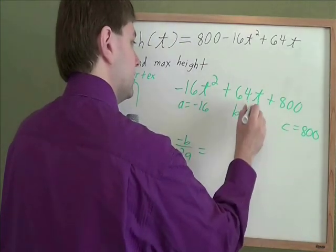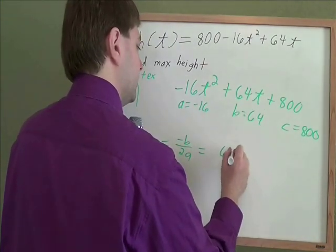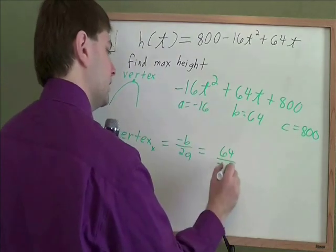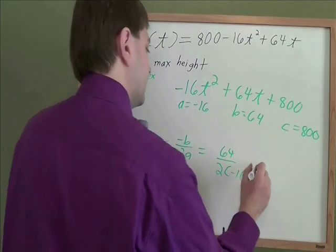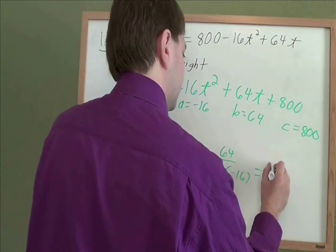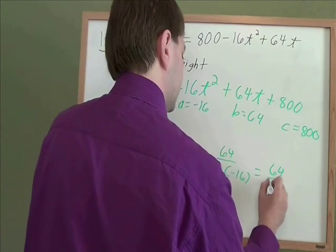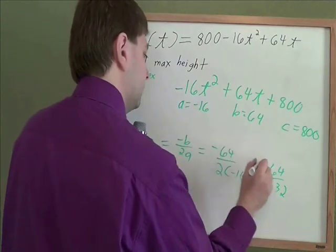So b was 64, the part next to the plain old t. a was negative 16, the part next to the t squared. 2 times negative 16 is negative 32. Don't forget that's a negative b.